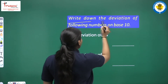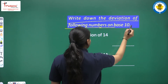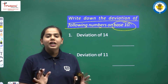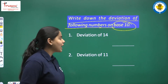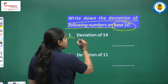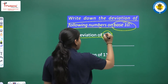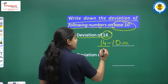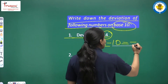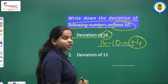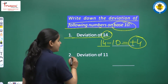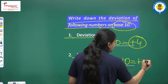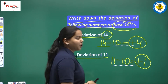Now let us practice: write down the deviation of following numbers on base 10. We take base as 10 because the numbers are near to 10. Deviation of 14: the number is bigger, so 14 minus 10 gives us plus 4 — positive deviation. Deviation of 11: 11 minus 10 gives us plus 1 — again a positive deviation.